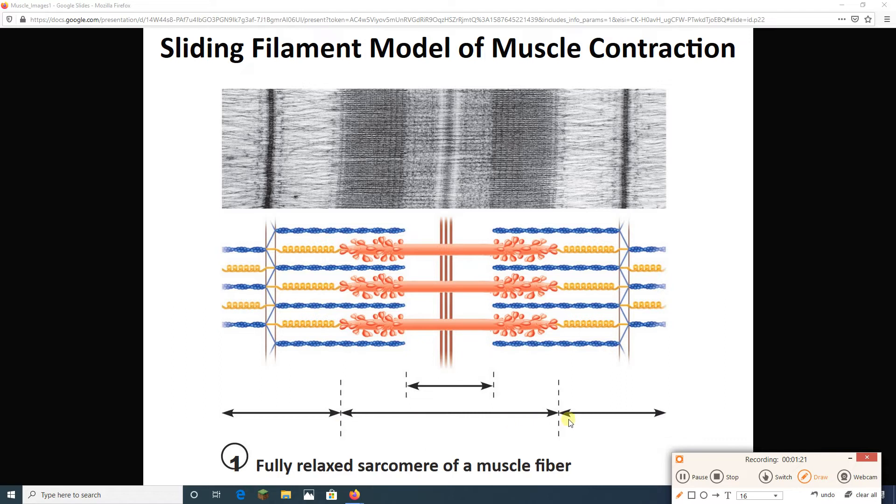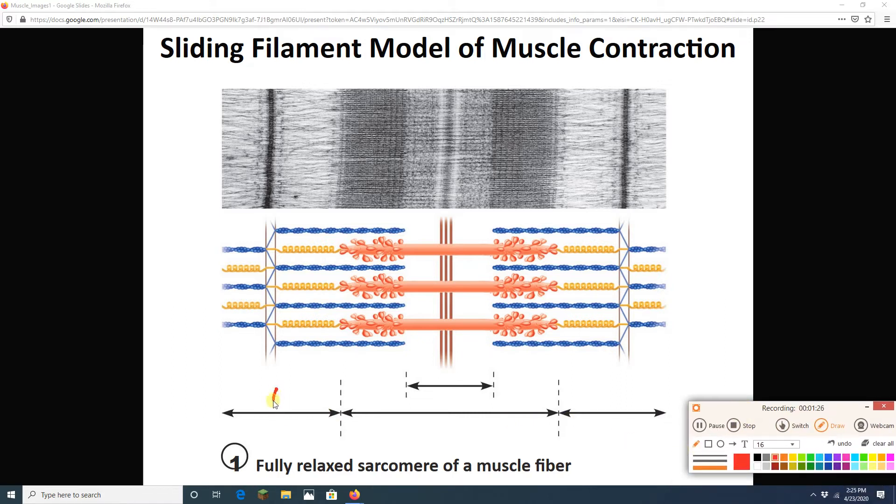This arrow is the A-band. Let's actually label these guys. So this arrow is the I-band. This one is A. This one is I. And this one is H. Measure all of them with your fingers or just eyeball them for me.